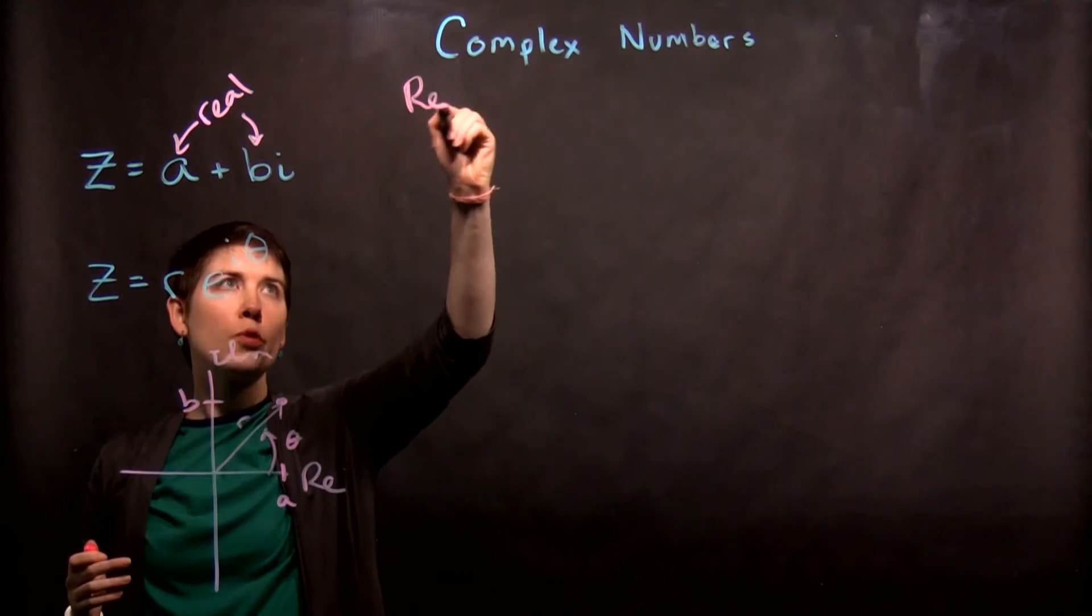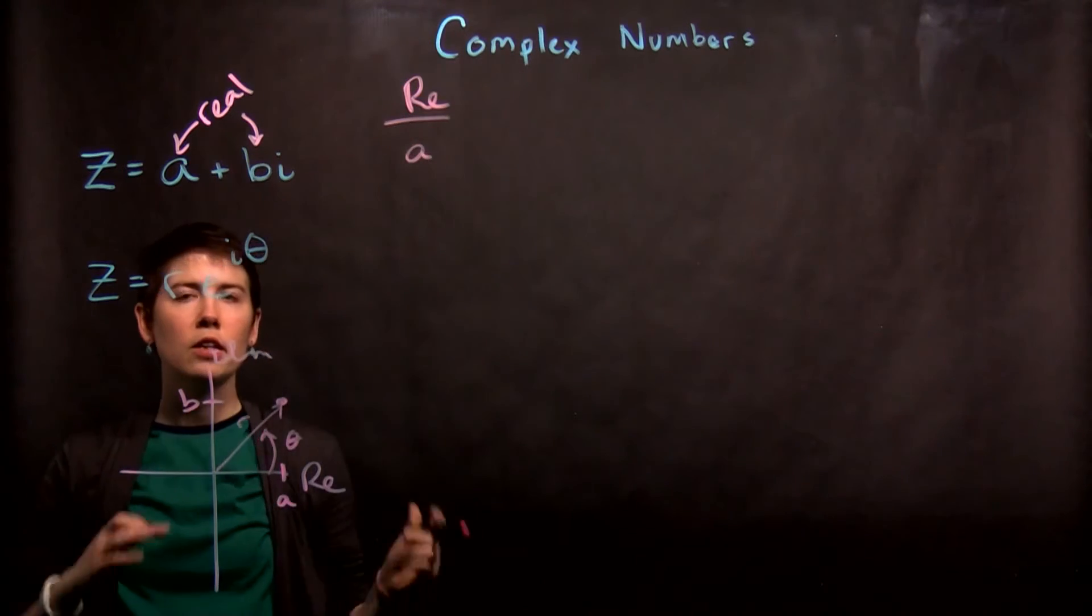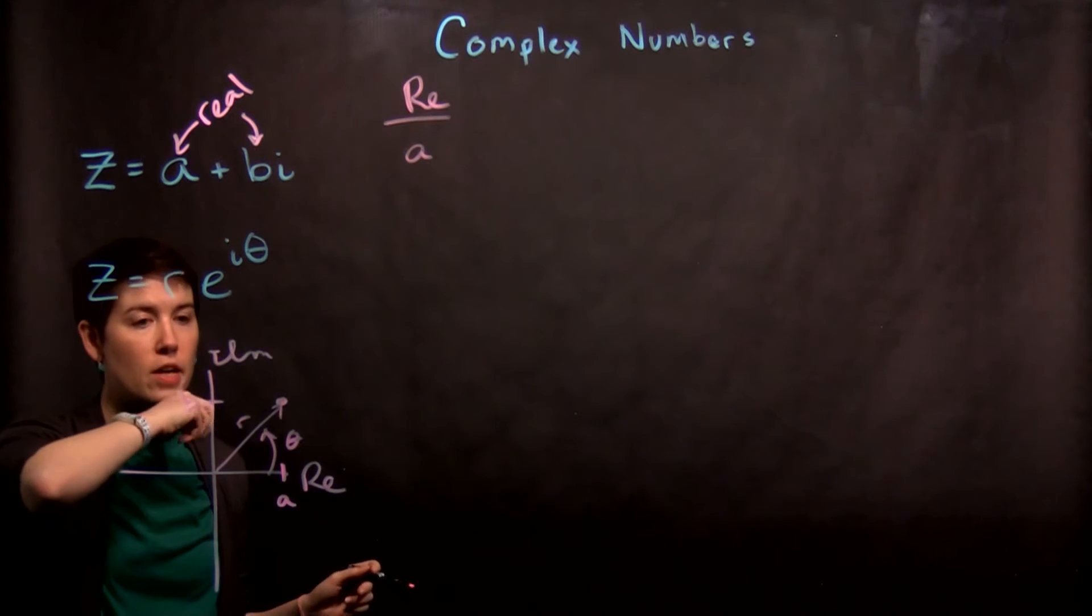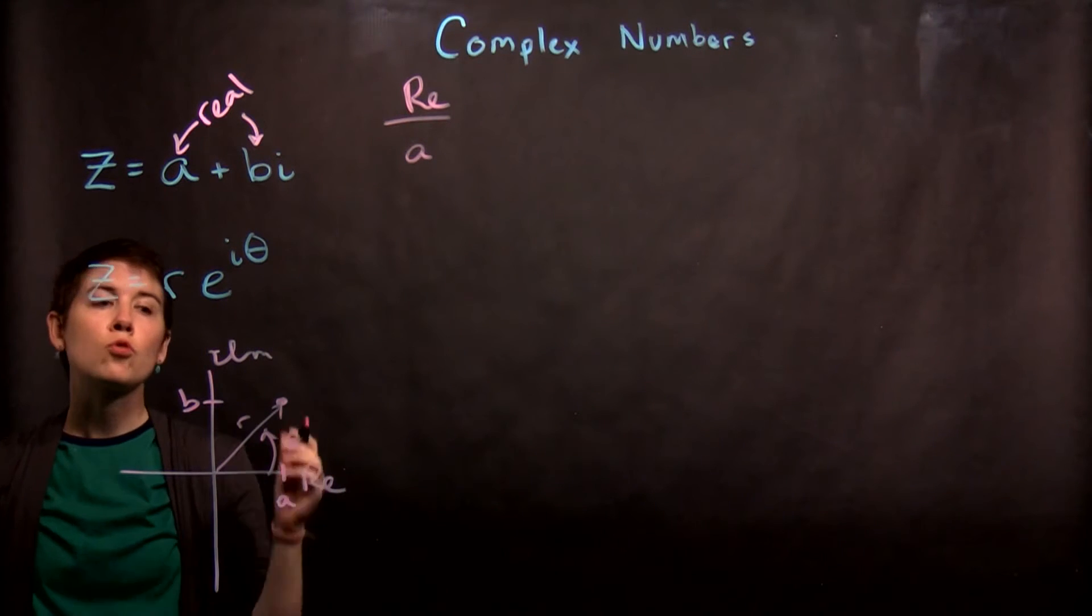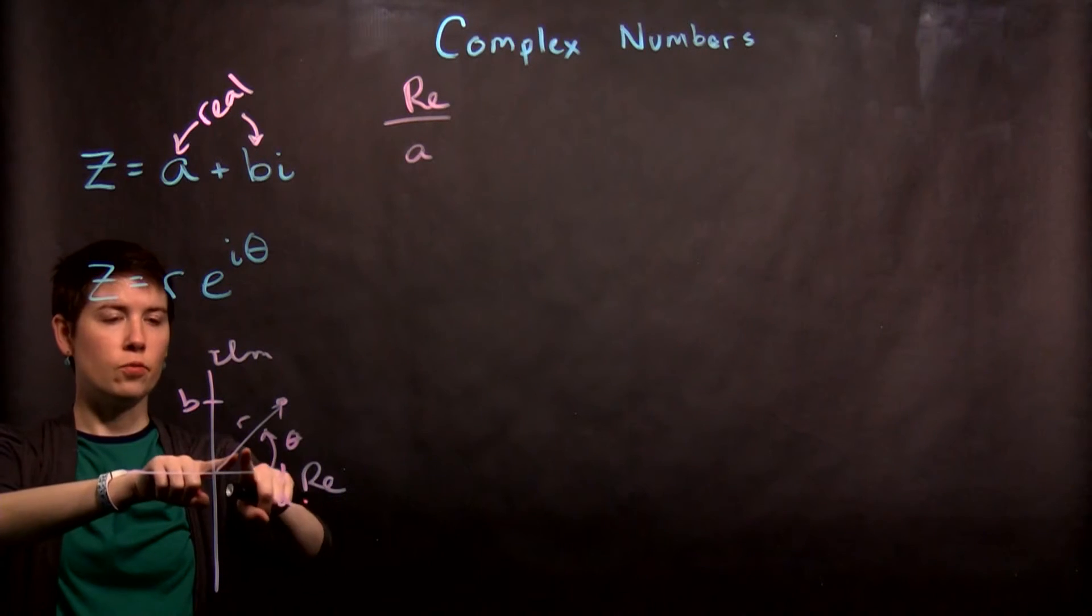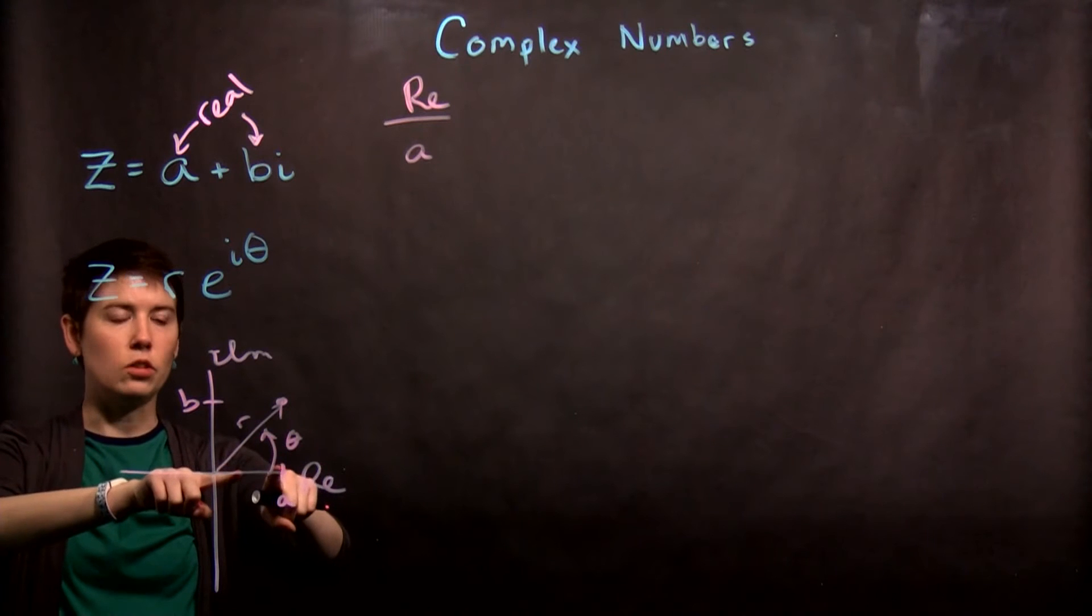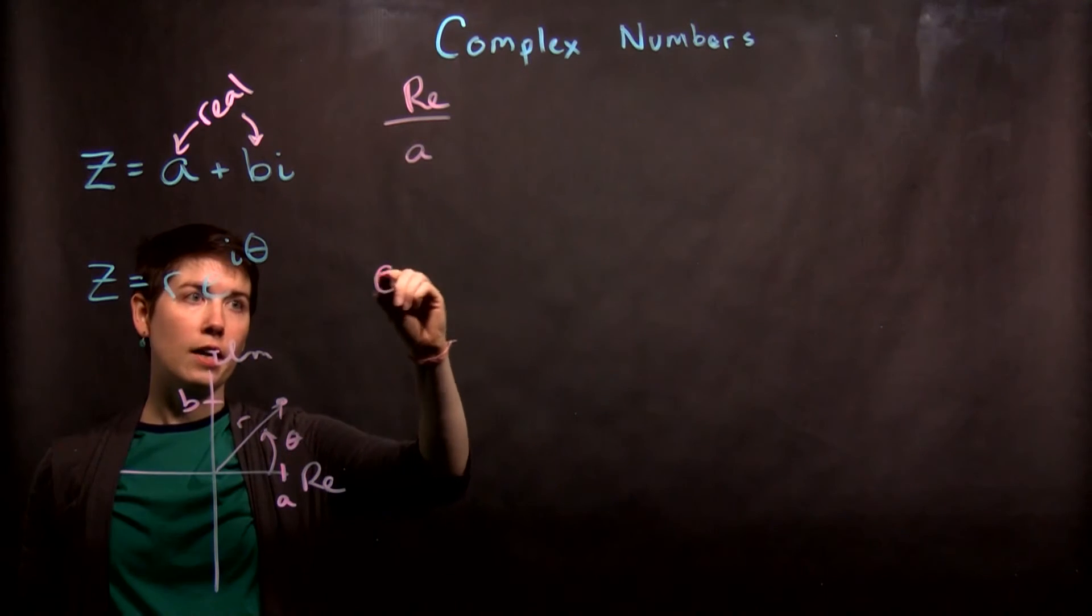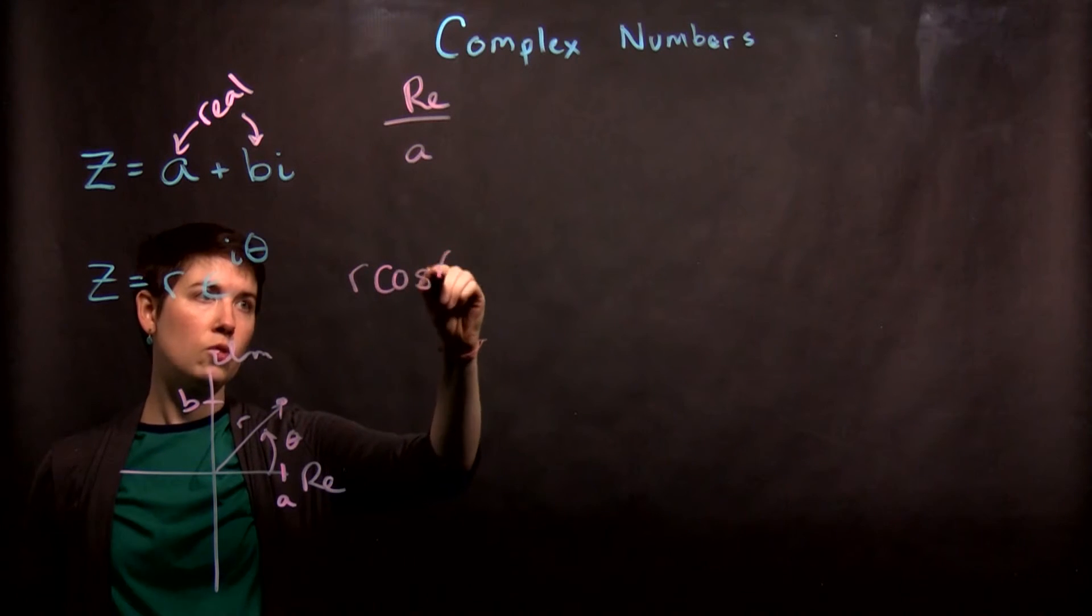So if we want just the real part, here it would be a, what do we do here? So here it's not r and it's not theta, we have to think about this triangle. And in fact the real component of this, if we think about this as now being an angle, it would be the adjacent side. So this is in fact r cosine of theta.